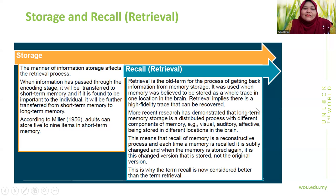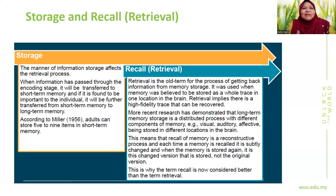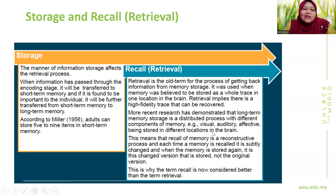Memory is defined as the process of maintaining information over time — the mental function that enables humans to receive, maintain, and recall sensations, information, and situations they have experienced. There are three main types of memory: sensory, short-term, and long-term. Long-term memory storage is a distributed process, with different components like visual, auditory, and affective memory stored in different brain locations. Recall is a reconstructive process bringing together different memory components, and the hippocampus is involved in memory. The recall process for long-term memory depends on relevance, significance, and emotion — things that made you angry, happy, or sad are more memorable.